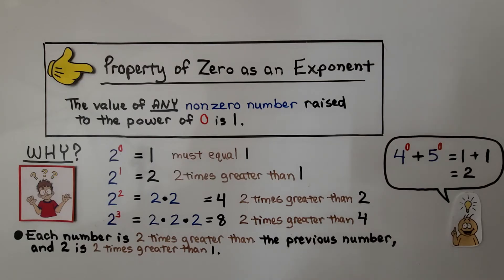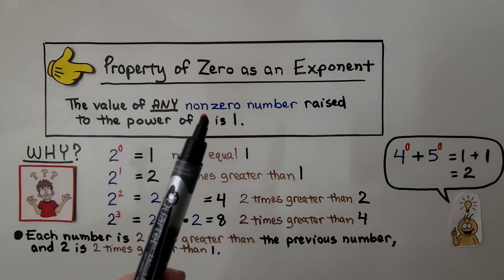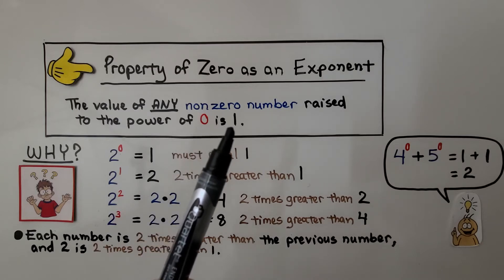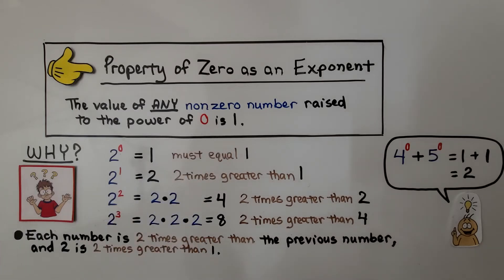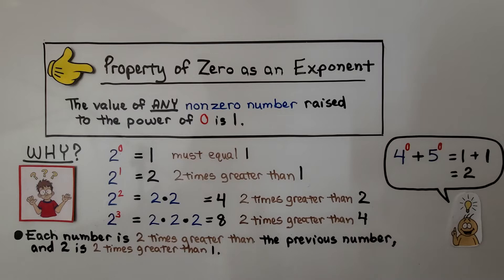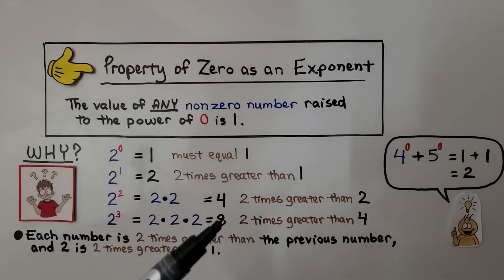This is the property of 0 as an exponent. The value of any non-zero number raised to the power of 0 is 1. Each number is 2 times greater than the previous number, and 2 is 2 times greater than 1. Here we have 2 raised to the third power — that's 2 times 2 times 2, which equals 8.